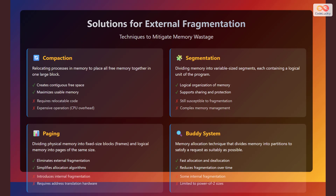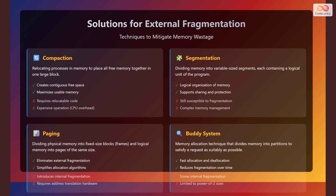The other technique is paging. It divides physical memory into fixed size blocks called frames, and logical memory into pages of the same size. This eliminates external fragmentation and simplifies allocation algorithms. However, it introduces internal fragmentation and requires address translation hardware. The other technique is the buddy system. This memory allocation technique divides memory into partitions to satisfy a request as suitably as possible. It provides fast allocation and deallocation and reduces fragmentation over time. However, it has some internal fragmentation and is limited to power of two sizes.